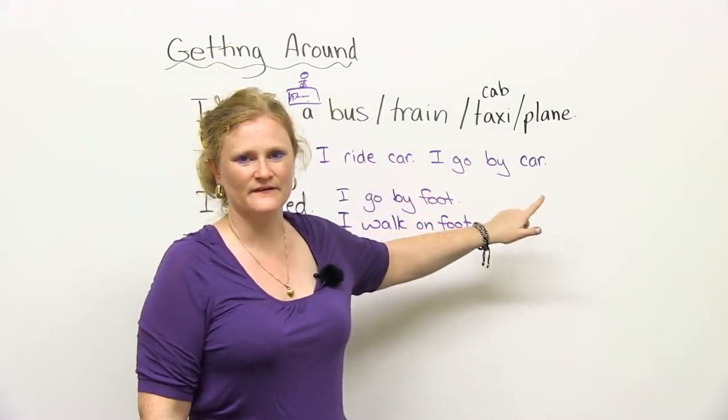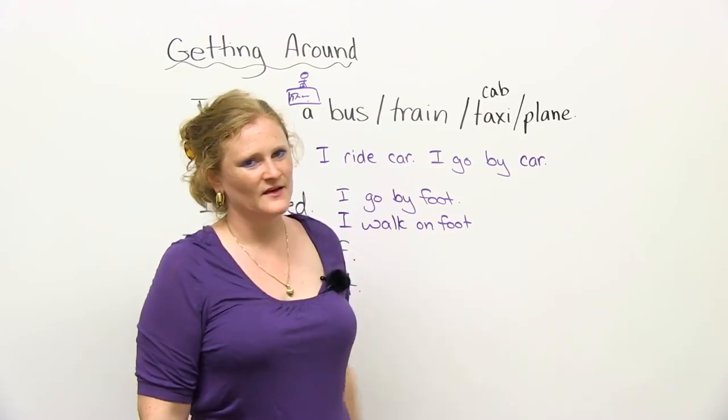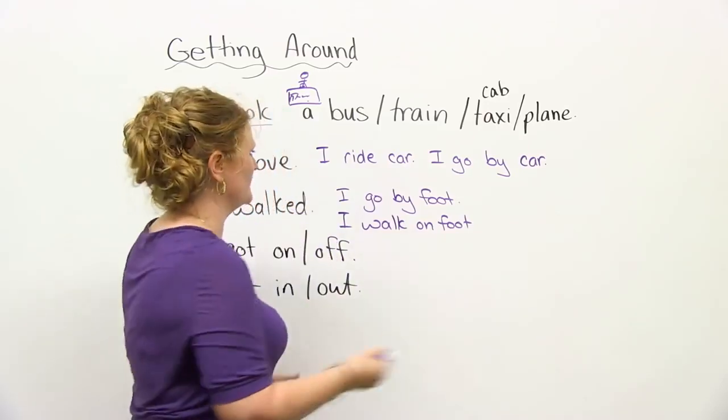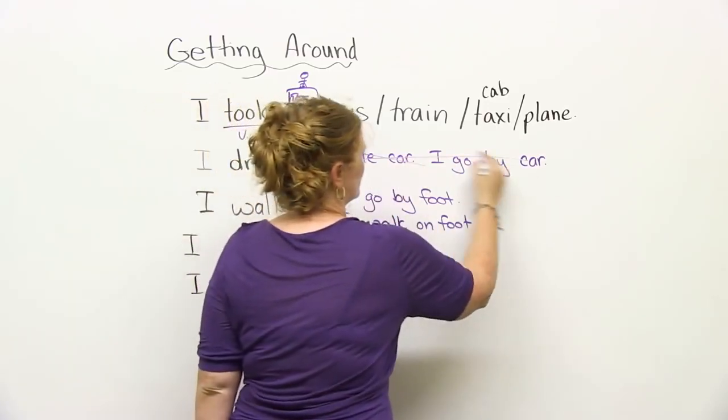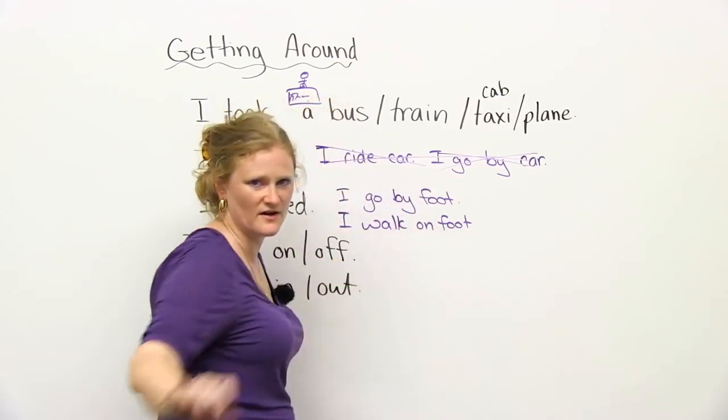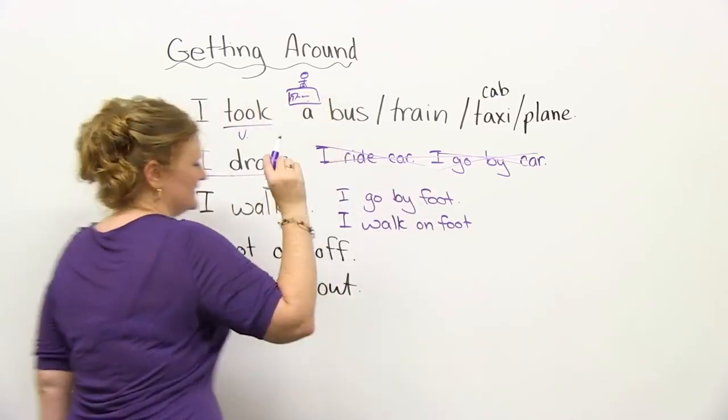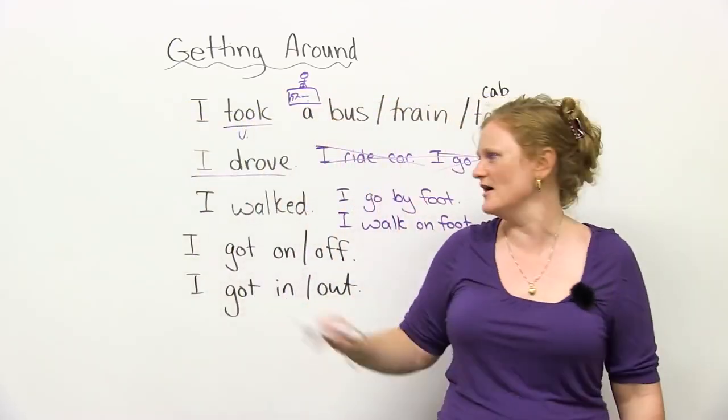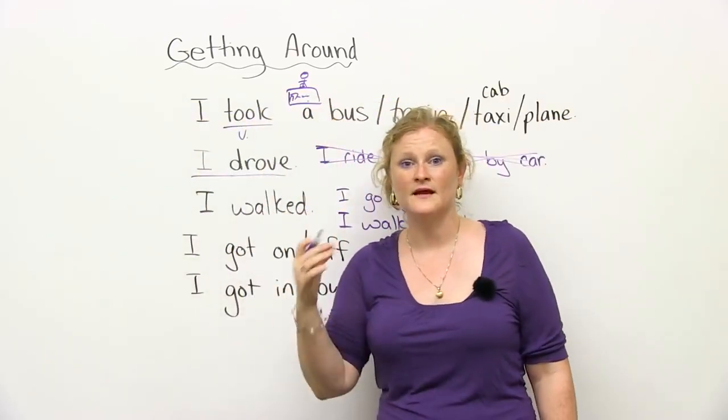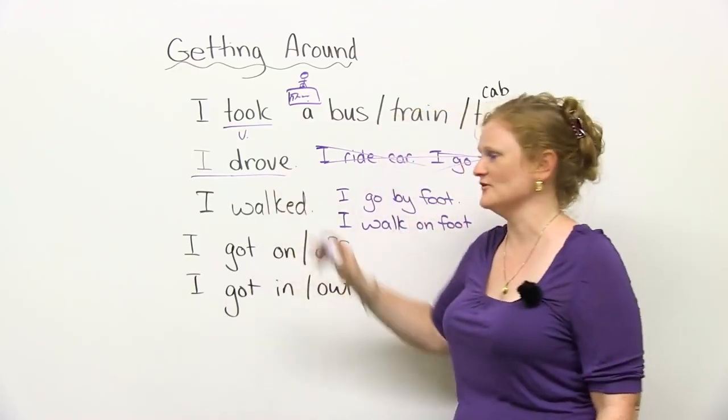I go by car. No, no, no. These, unfortunately, are wrong. We don't say, I go by car or I ride car. We say, very easily, past tense of the verb drive, drove. How did you get here? I drove.